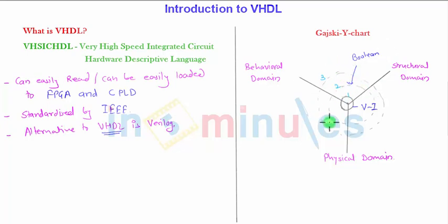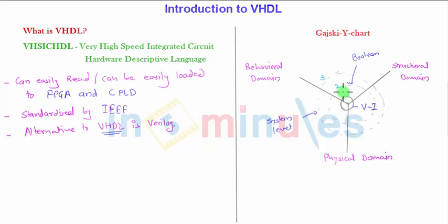If you go farther toward the third circle, we can call it the system approach or system-level design. In system-level design, a number of Boolean expressions are involved, and in Boolean expressions, a number of logic gates are involved. So exactly at the center there is basic logic — zero or one logic, and the currents or voltages.